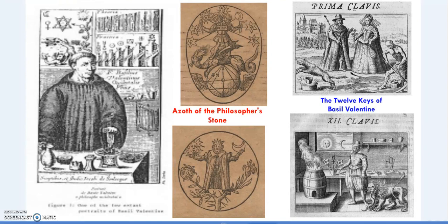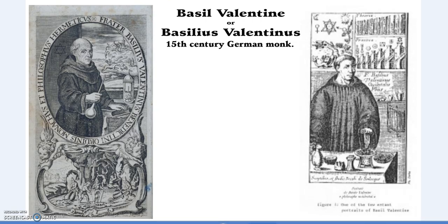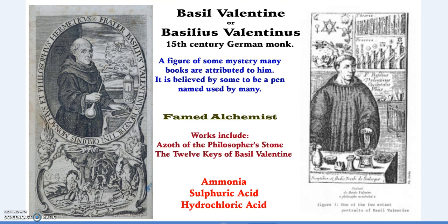Who is Basil Valentine? The term 'rebus' is probably most connected to him — you can see these illustrations. There are various ideas of who he actually was. Some say he was a 15th-century German monk working in the salt industry; others say he was a collection of many individuals working under a pen name, but he is a famed alchemist.